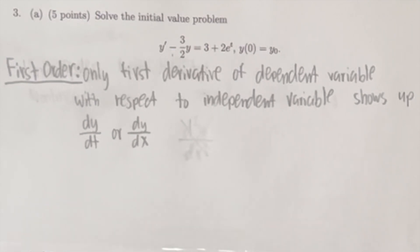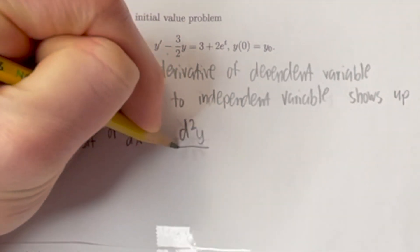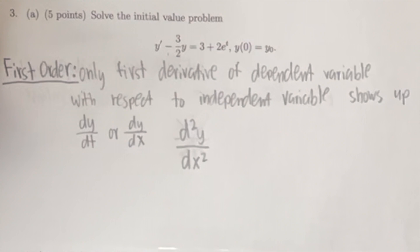First, that the differential equation in the problem is first order, meaning that only the first derivative of the dependent variable with respect to the independent variable shows up. In other words, there can be a dy/dt or dy/dx, but there cannot be d²y/dx² or anything higher.